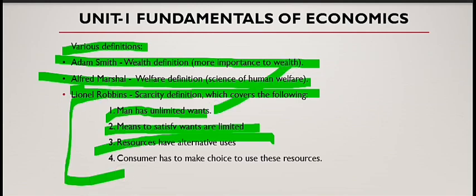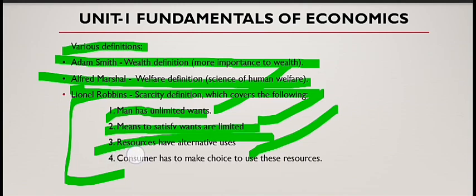So from your limited resources — your limited salary — you have to decide which want is most important. This covers the four points: unlimited wants, means to satisfy wants are limited, resources have alternative uses, and finally the consumer has to make a choice. Man has to make use of his limited resources to satisfy unlimited wants. He cannot satisfy all his wants. Every man has to decide which wants to satisfy now and which to postpone. Thus economics is also called the science of choice.